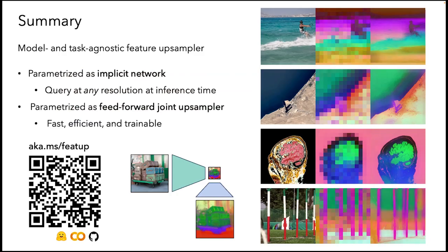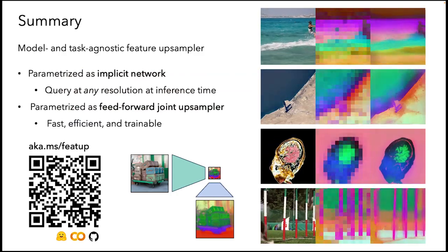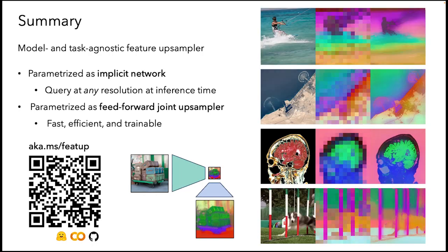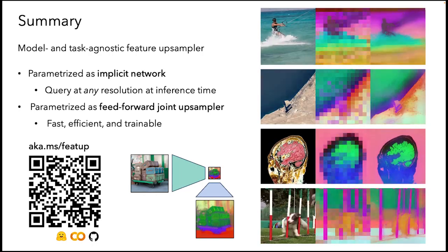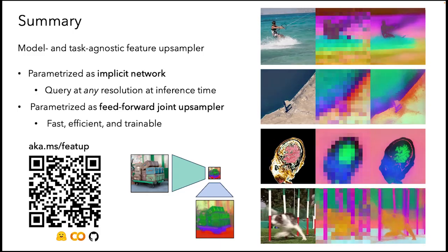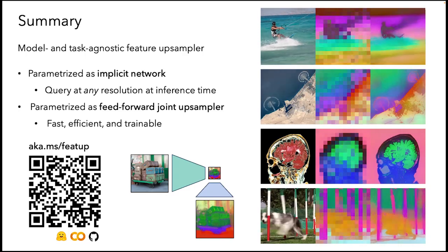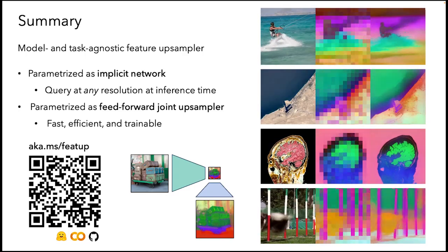In summary, we propose a new feature upsampler that can be trained with a multi-view reconstruction framework. Parametrized as a joint bilateral upsampler, FEEDUP is a lightweight, feedforward module that can be dropped into any existing architecture and trained end-to-end. As an implicit network, FEEDUP learns a per-image representation that can be queried at any resolution at inference time.